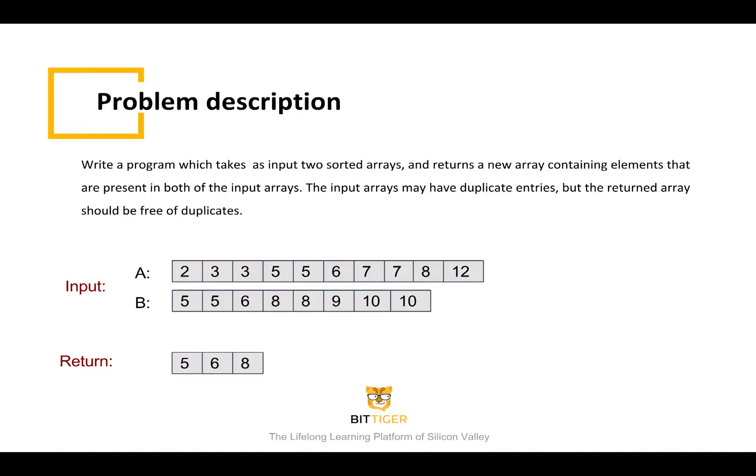For example, we have two arrays, A and B here. For these two arrays, we should return a new array with only the common elements in both arrays of 5, 6, and 8.